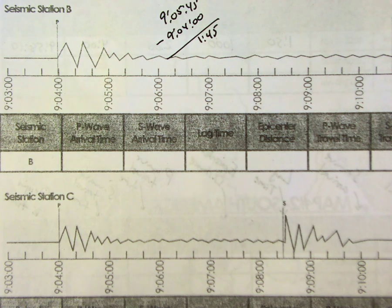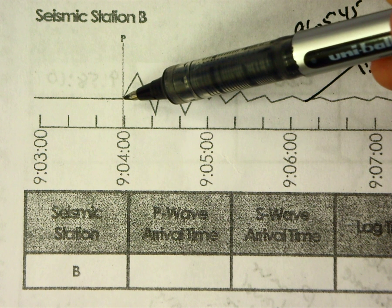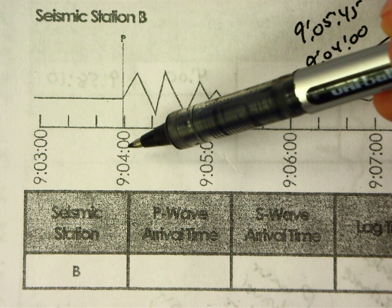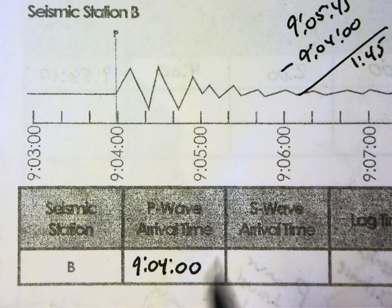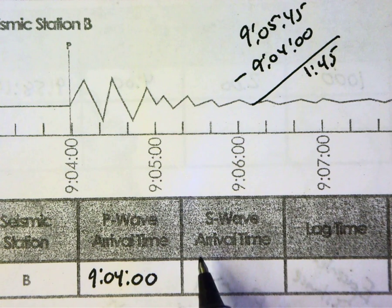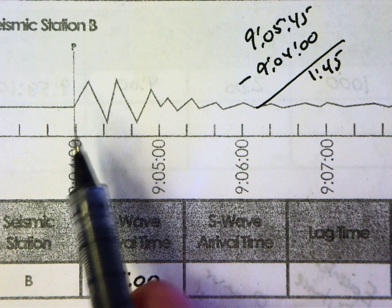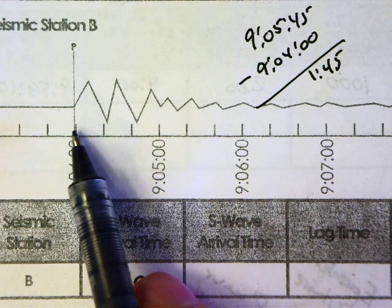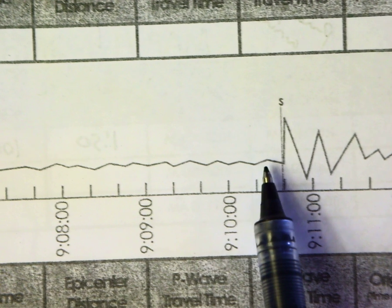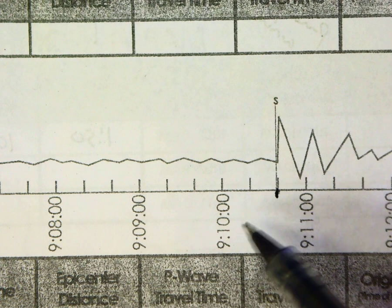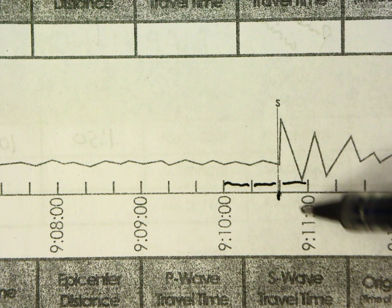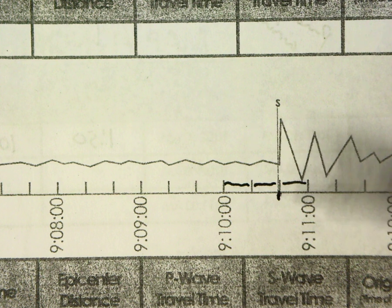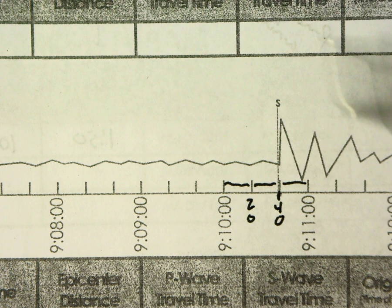So your P wave arrival time is 9:04 — morning or night, we're not sure. For the S wave arrival time, P waves are faster so they arrive first; S waves are slower. The S wave appears a bit later. Tracing it down, it crosses between 9:10 and 9:11. There are three spaces between those two minutes, so 60 seconds divided by 3 means each space is 20 seconds. The S wave traces down to 40 seconds, so the S wave arrival time is 9:10:40.